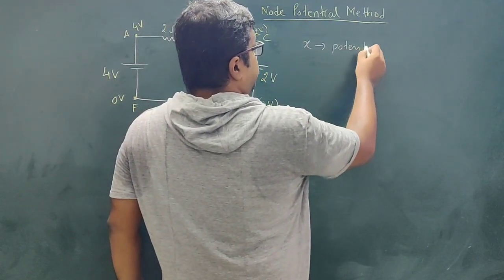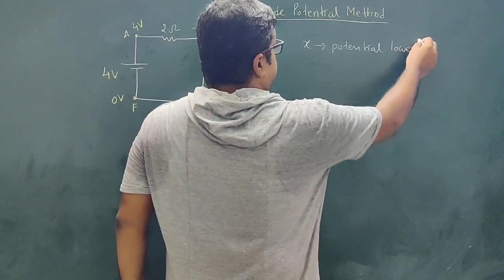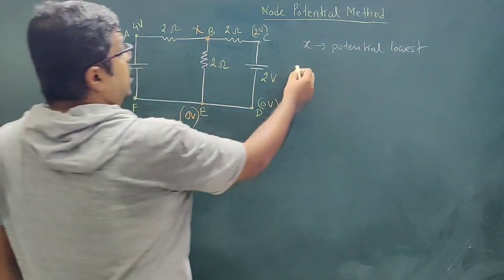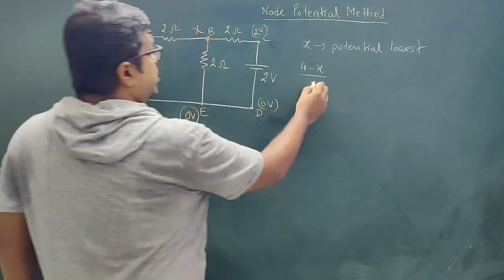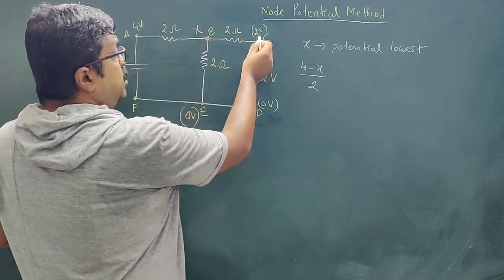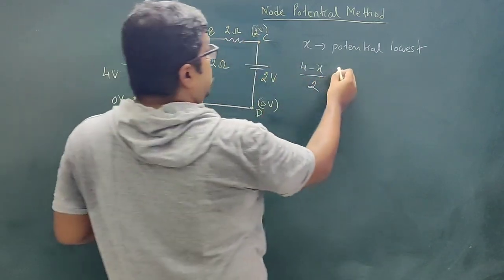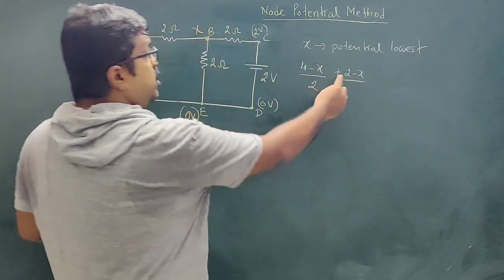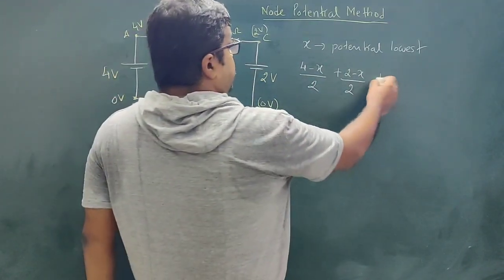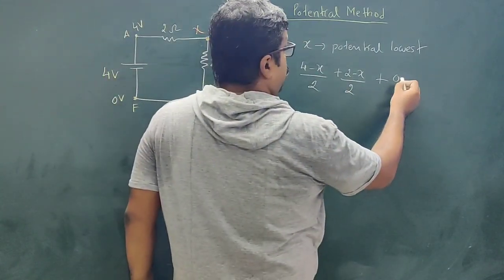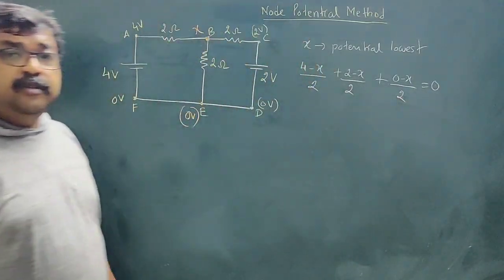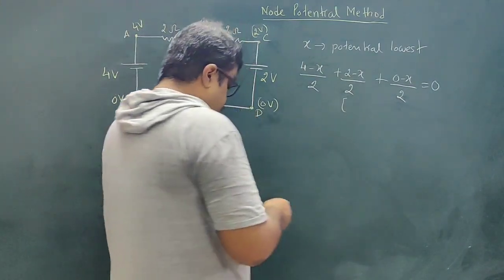So let us assume that the potential at X is lowest. The current flowing in this direction from the 4 V side is (4 minus X) divided by 2. The current flowing from the 2 V side is (2 minus X) divided by 2. The current from the 0 V side is (0 minus X) divided by 2. The algebraic sum of currents meeting at this point equals zero — that is the junction rule.